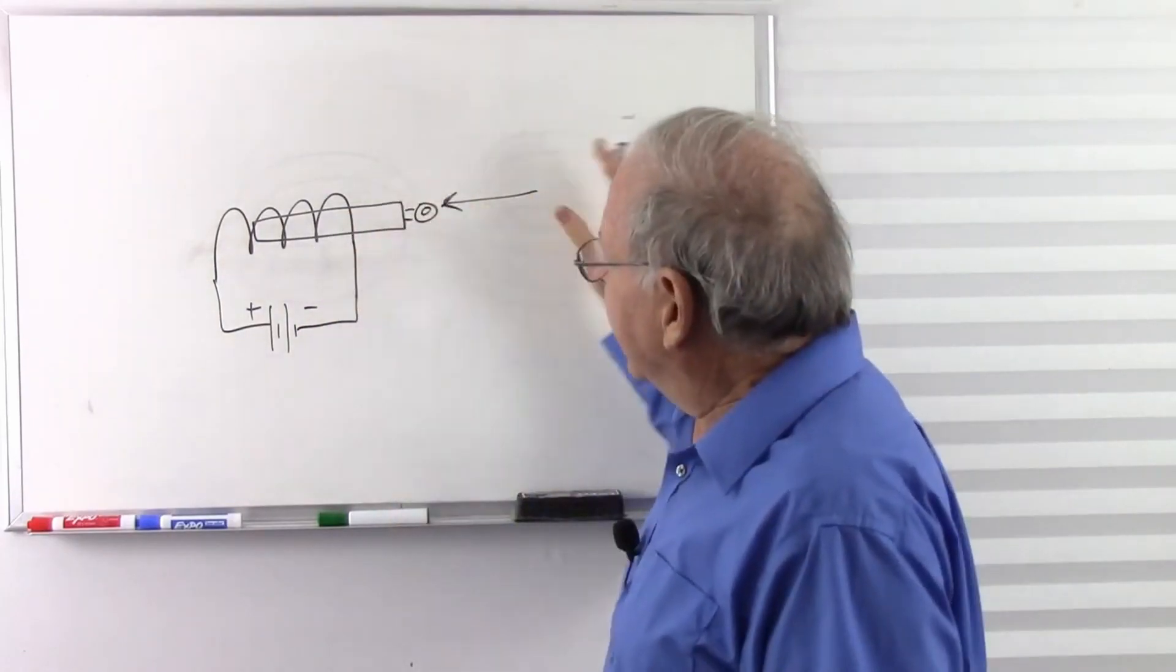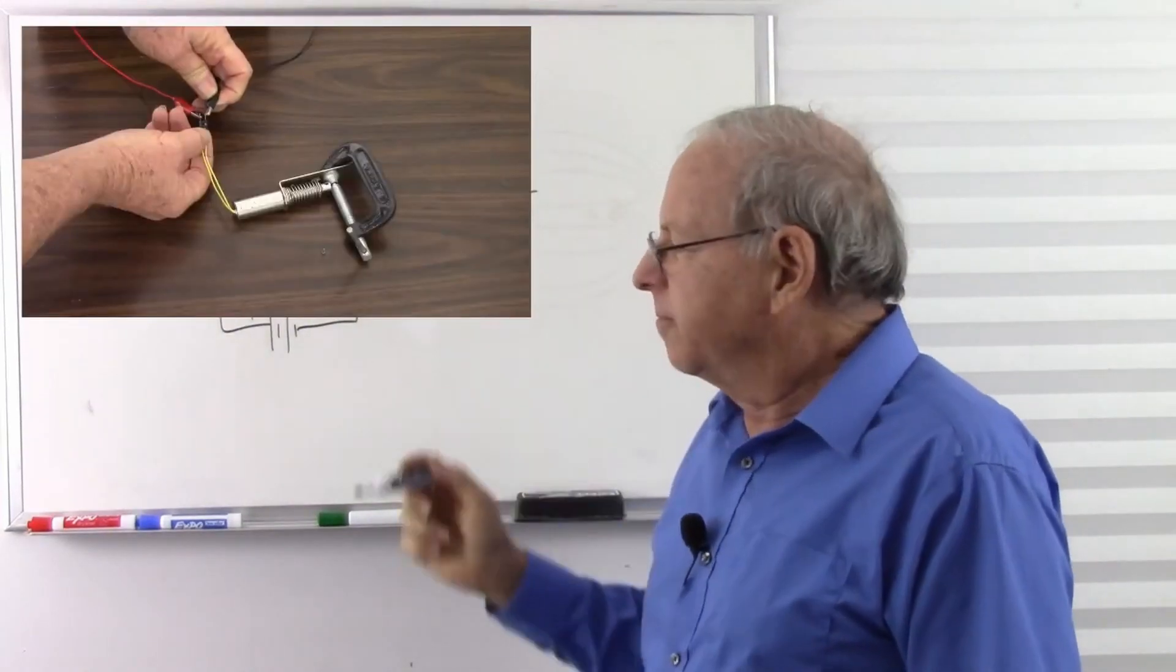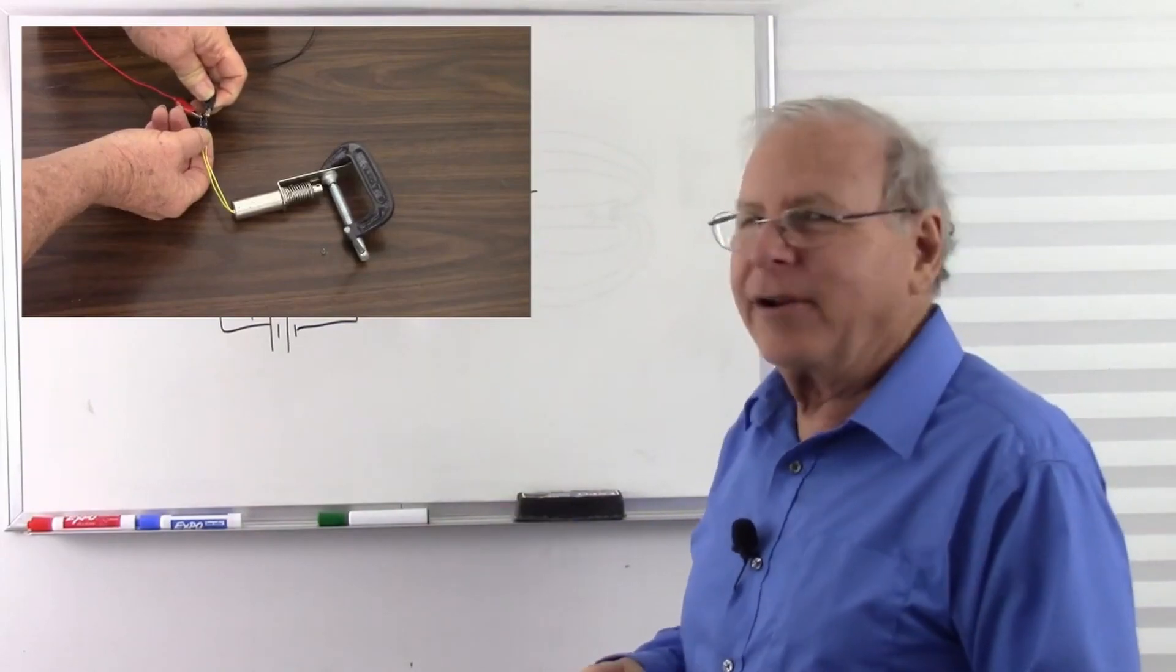So we have an electromagnetic actuator that pulls something in. It's a linear actuator, which is typically how solenoids work. Here's a picture of one working with just a 9-volt battery and pulls in the actuator.